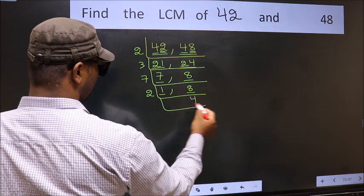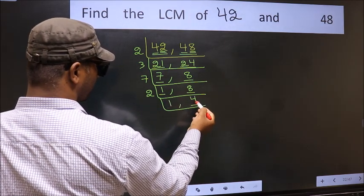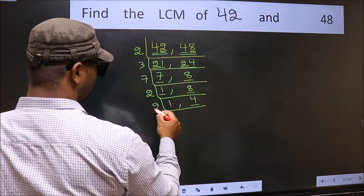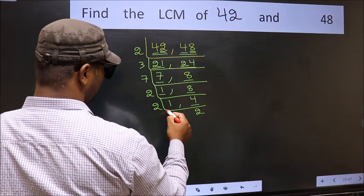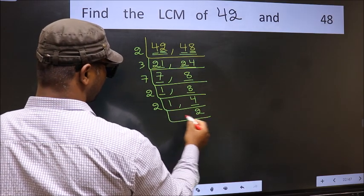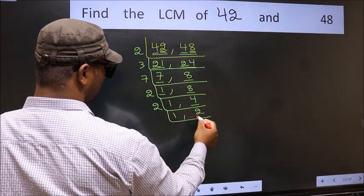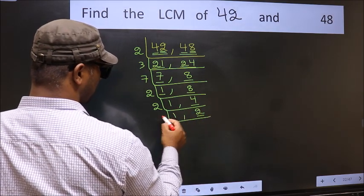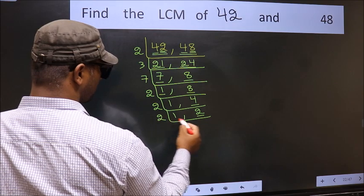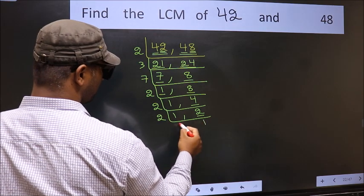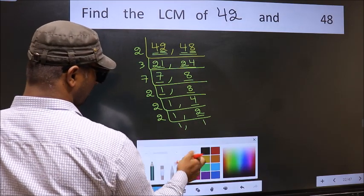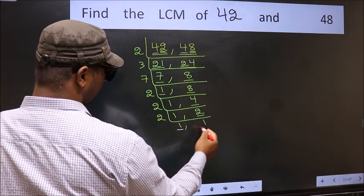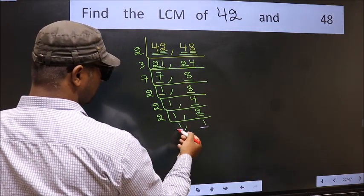8 is 2 — 4 twos are 8. Now we have 4 — 2 twos are 4. Now we have 2 — 2 is a prime number, so 2 — 1 two is 2. So we got 1 in both places.